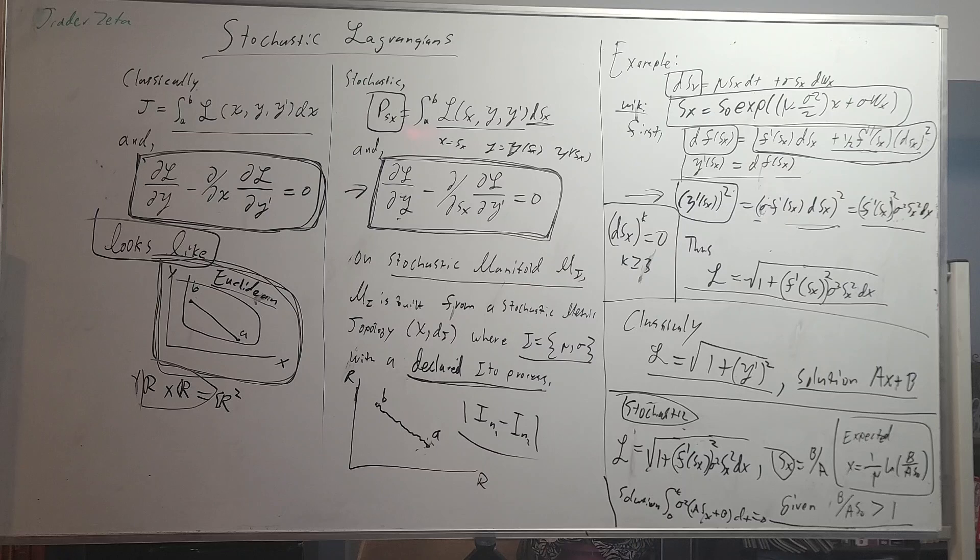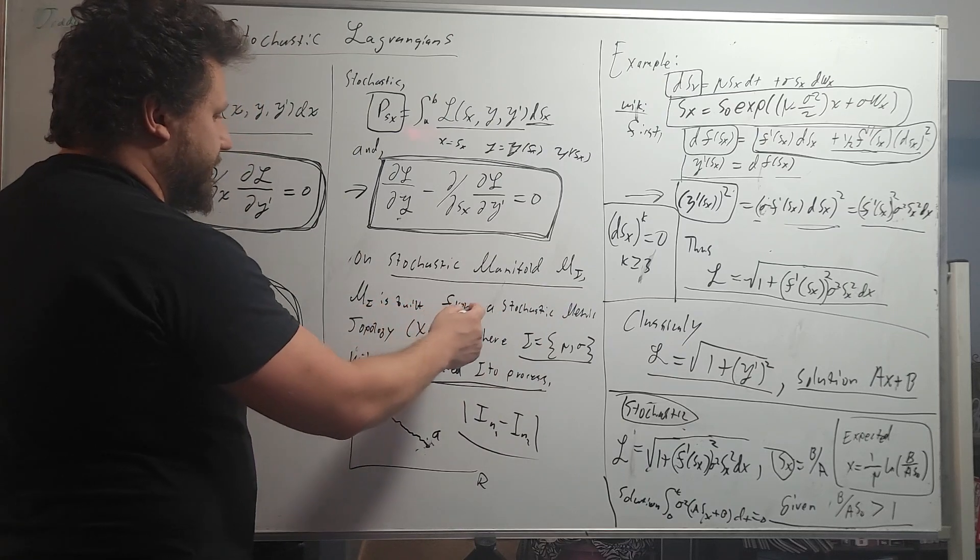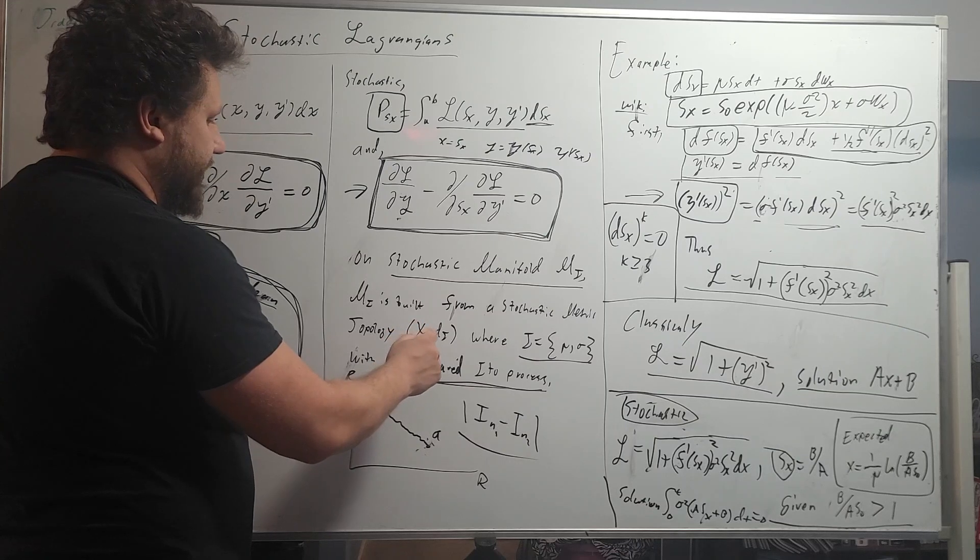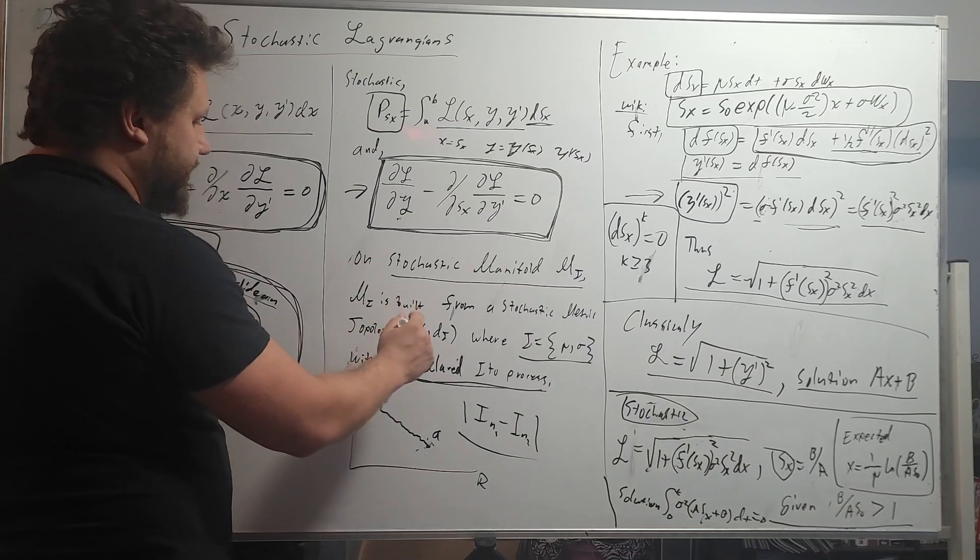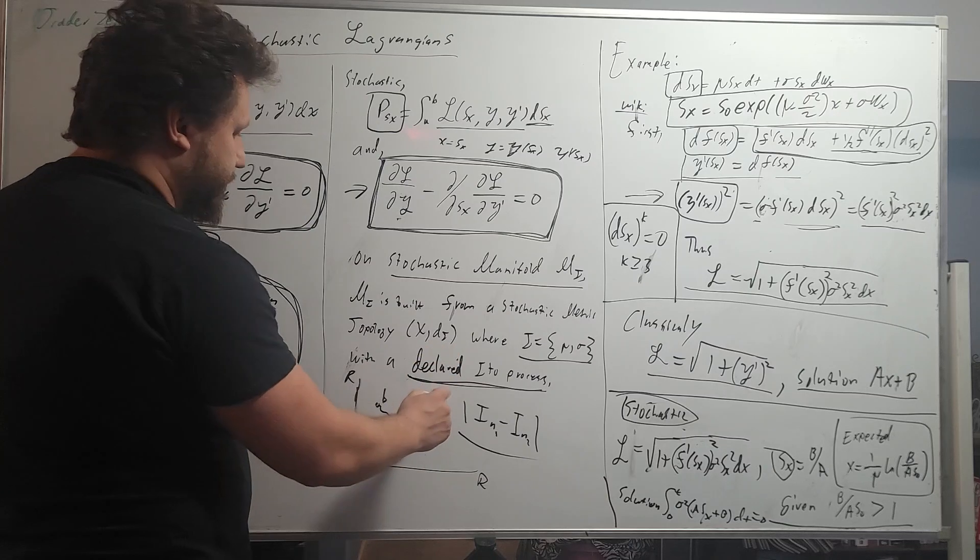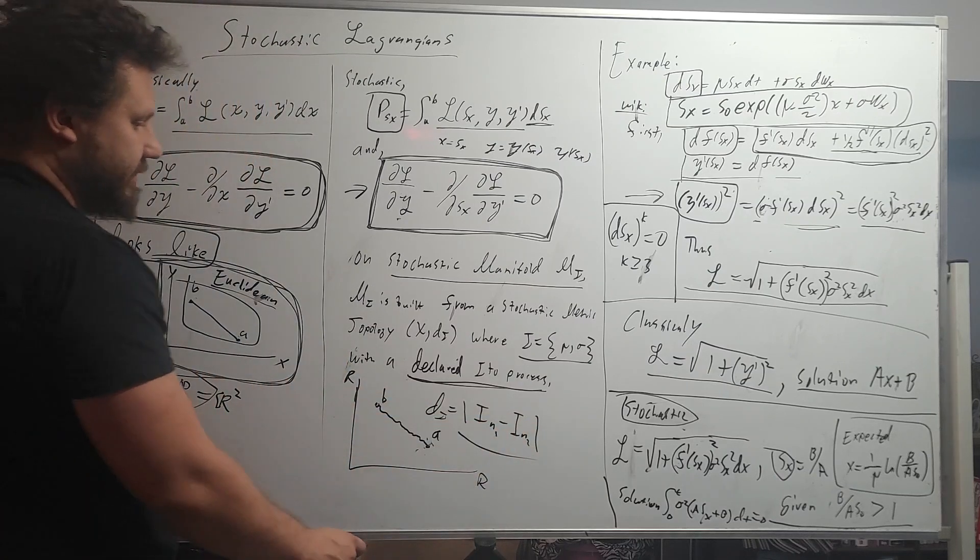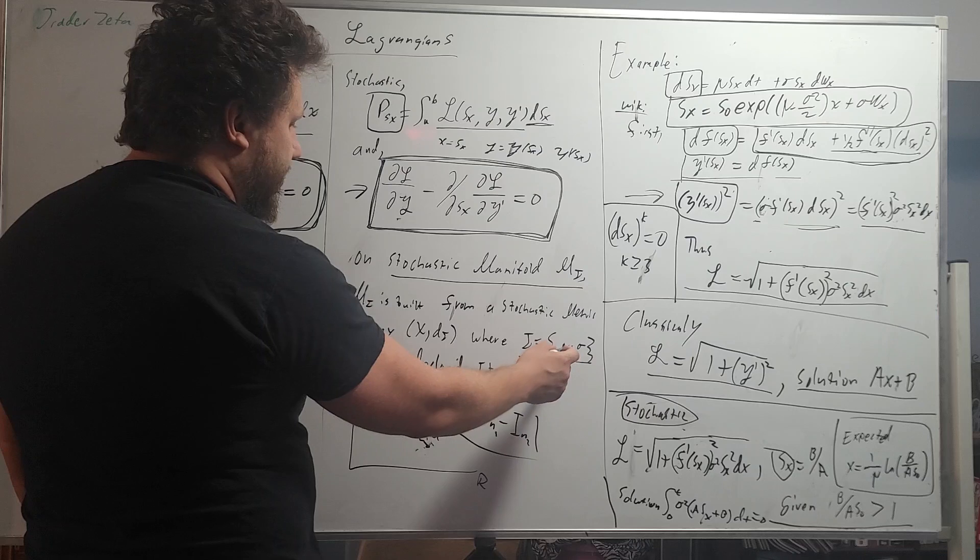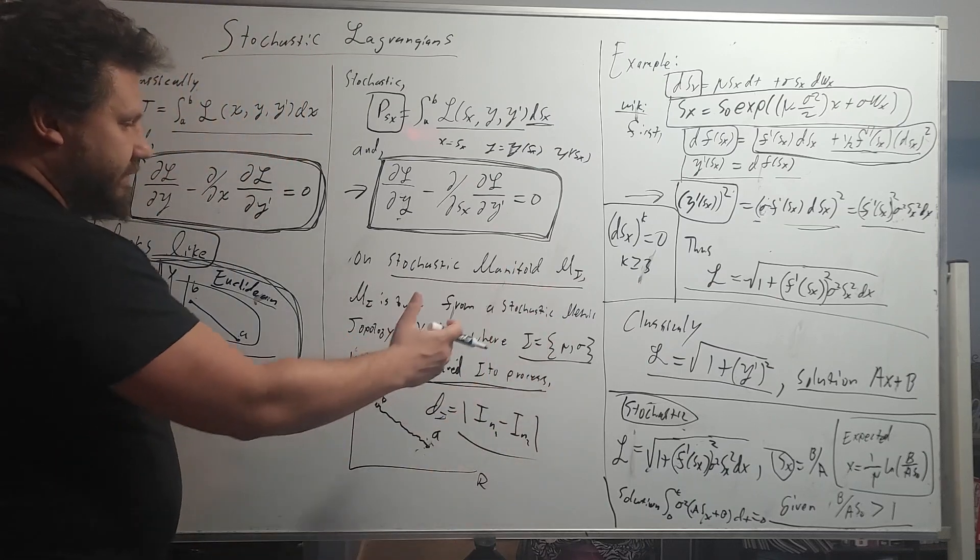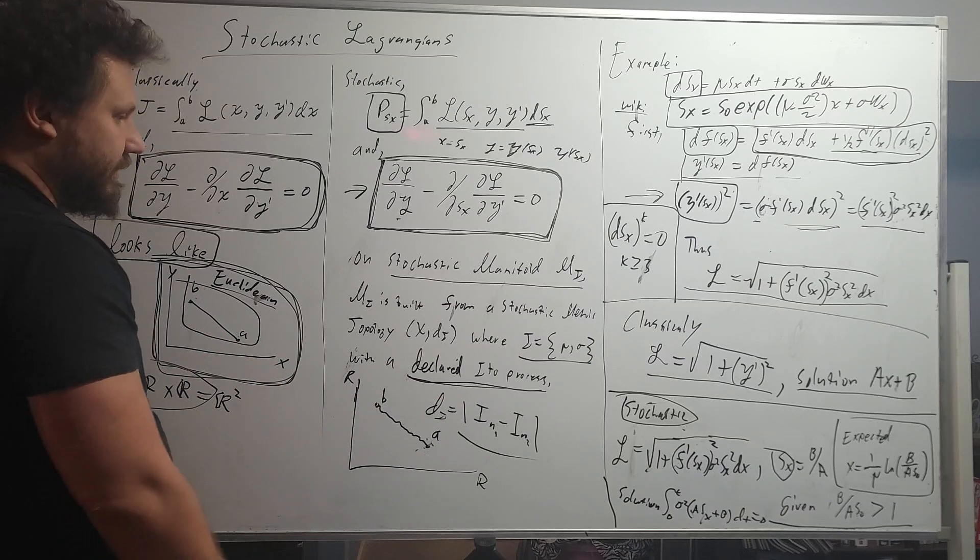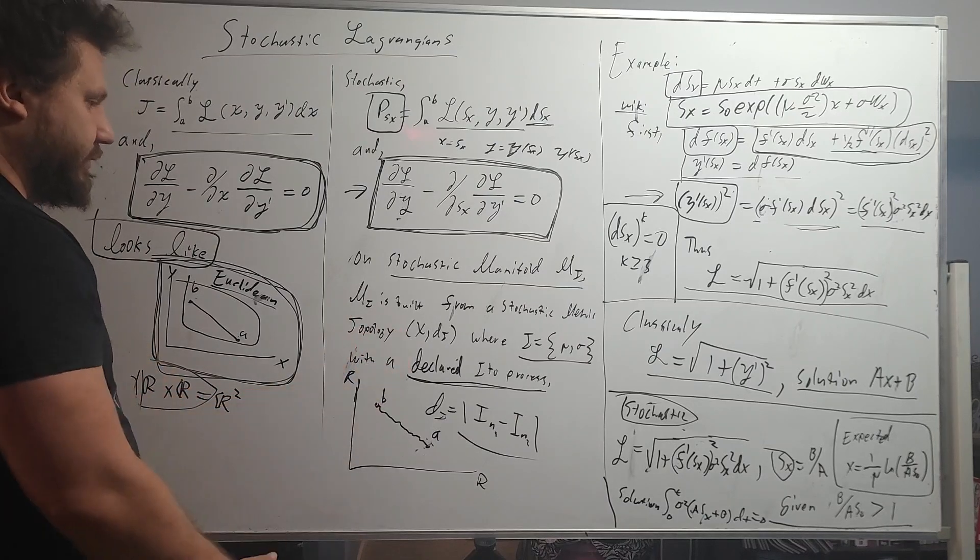So the question is, when does this work? When is this useful? Basically, on a stochastic manifold m sub i, m is built from a stochastic metric topology, where we have a set x and a distance function d sub i. In this particular case, x is going to be the real numbers R, and this distance function is here, where you have the difference between two general ideal processes. And where i is the mu and the volatility. These are considered to be homogeneous throughout. The mu and the volatility is the same throughout the entire manifold.